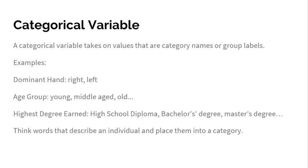A categorical variable takes on values that are category names or group labels. Example, is your dominant hand right or left? That's going to put you into a category. Are you in the right category or the left hand category? Age group, are you young, maybe under 20? Are you middle age, 20 to say 40? Or are you old, anything over 40? You can even have more age groups if you want, but you get placed into a category. Each individual, based on their response, goes into a category, hence categorical variable.